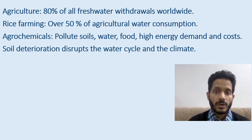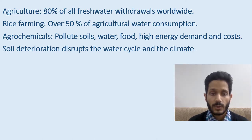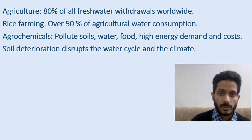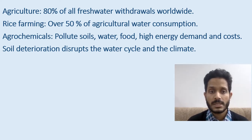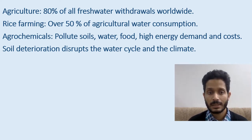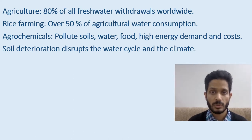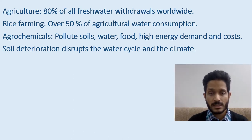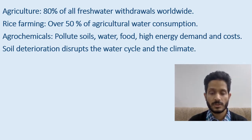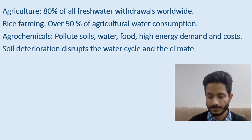Soil deterioration doesn't only mean we are unable to grow crops — it also means the climate is out of balance and the hydrogeological water cycle is out of balance. This is a systems problem which needs a systems perspective to develop systems solutions.